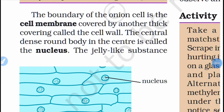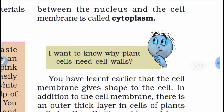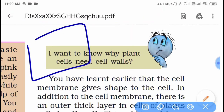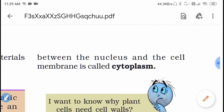The boundary of the onion cell — the cell membrane — is covered by another thick covering called the cell wall. This is found in plant cells. The dense round body in the center is called the nucleus. The jelly-like substance found between the nucleus and the cell membrane is called cytoplasm.